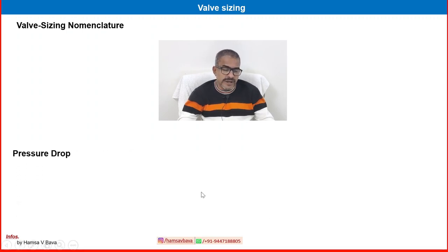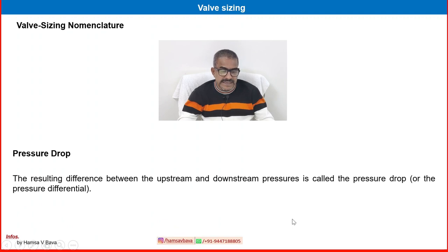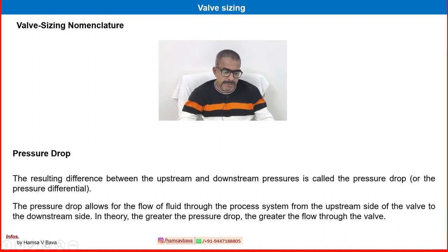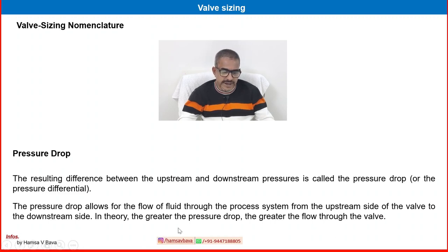Another important factor is pressure drop. The resulting pressure difference between upstream and downstream pressure is called the pressure drop or pressure differential. The pressure drop allows for the flow of fluid through the process system from the upstream side of the valve to the downstream side. In theory, the greater the pressure drop, the greater the flow through the valve.